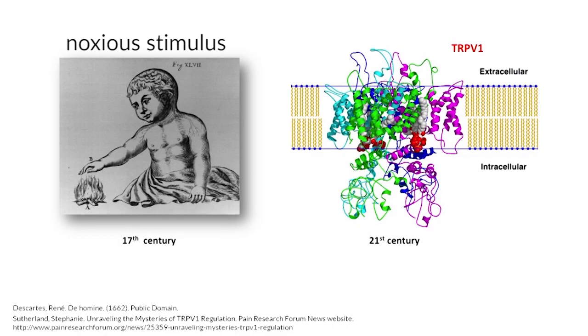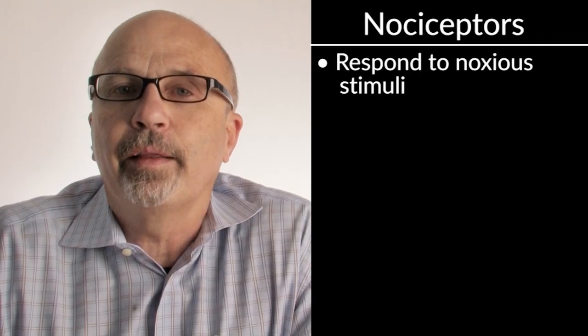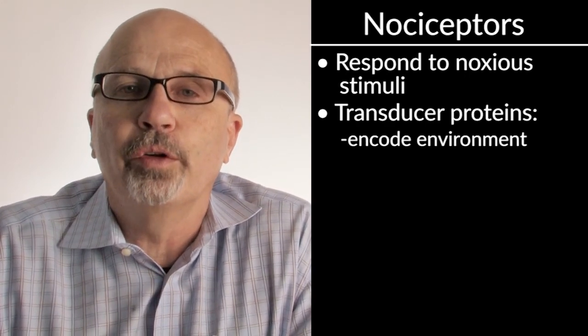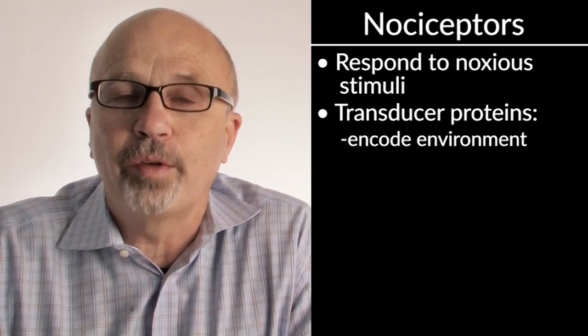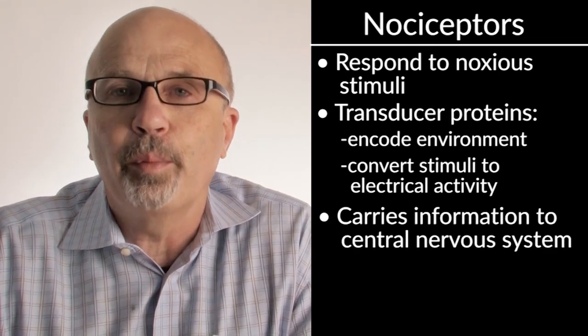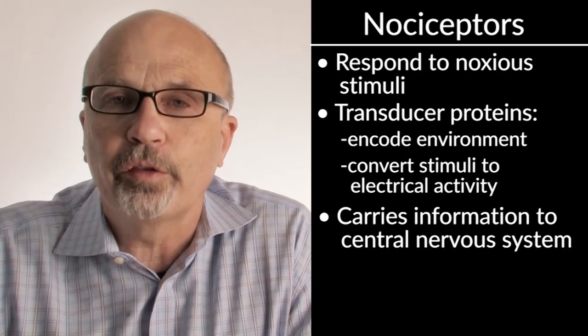This early warning device is mediated by a specialized sensory apparatus that is activated only by intense or potentially damaging stimuli — stimuli that we call noxious. The sensory fibers that mediate this function are called nociceptors, which respond only to noxious and not to innocuous stimuli. A major breakthrough in understanding pain mechanisms has come from the recognition that nociceptors have particular proteins called transducers, which encode features of the environment — particularly those associated with intense or damaging stimuli — and convert these stimuli into electrical activity, carrying information to the central nervous system where it can elicit both the sensation of pain and withdrawal responses.